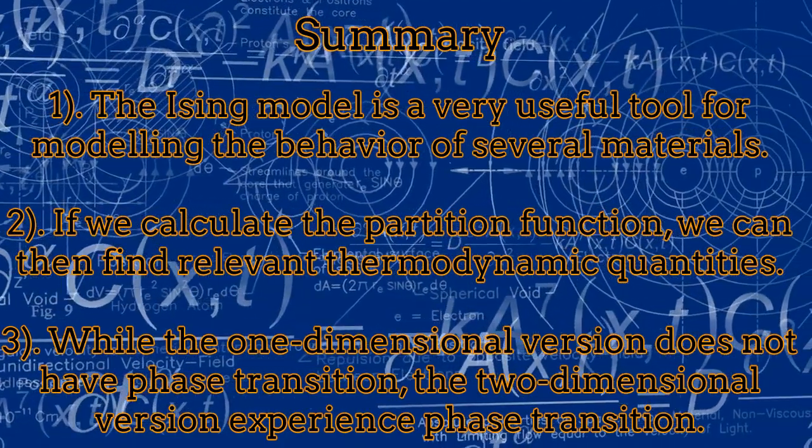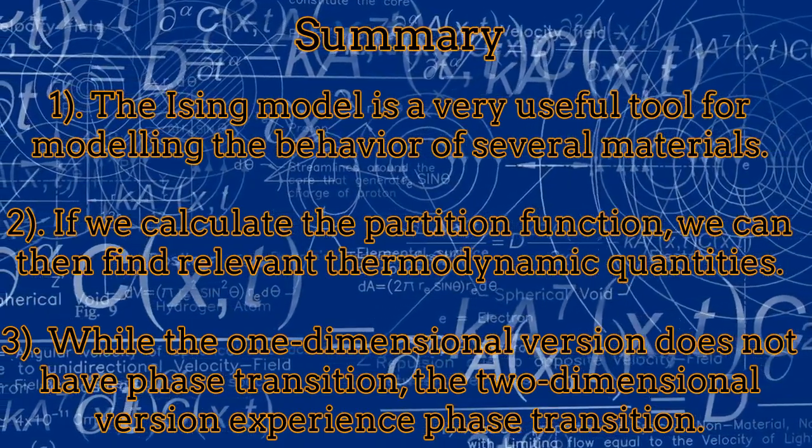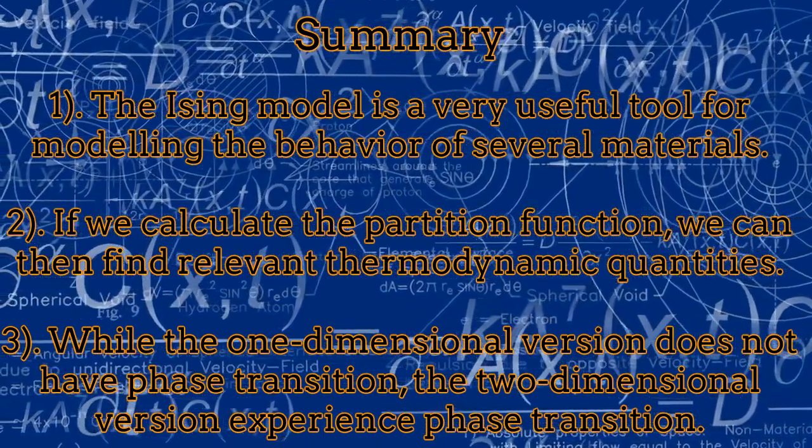Finally, while the one-dimensional version of the Ising Model doesn't have phase transitions, the two-dimensional case has a clear phase transition.